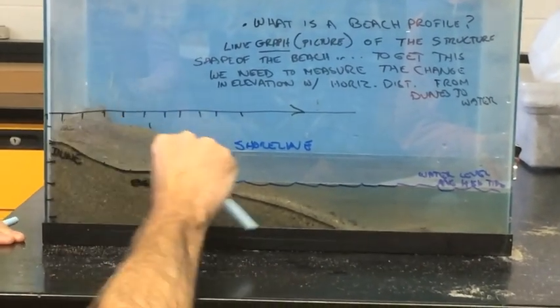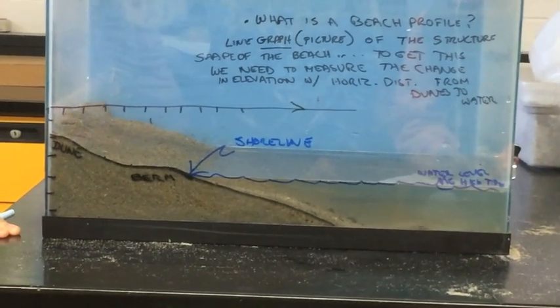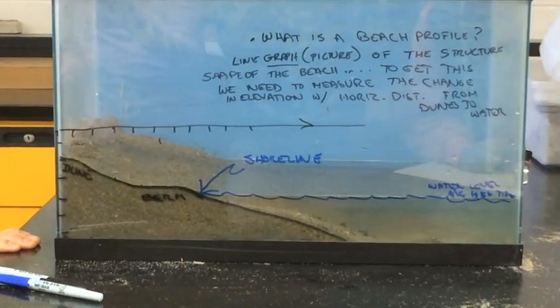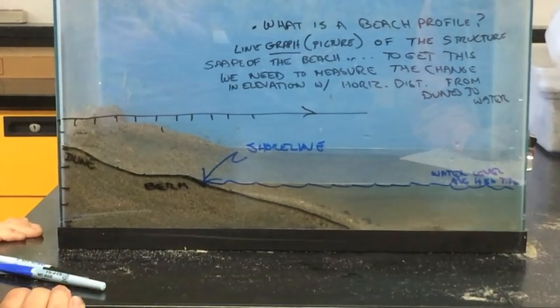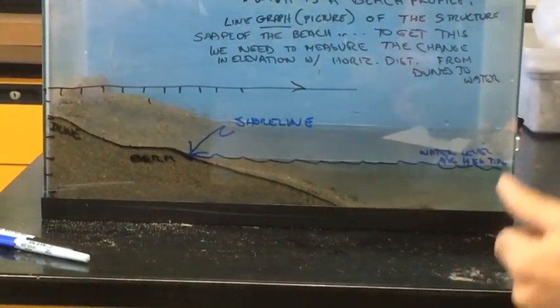Can the beach change? Can I change this profile? This is the profile of a summer beach typically. Let's create a winter beach now. How might this change?